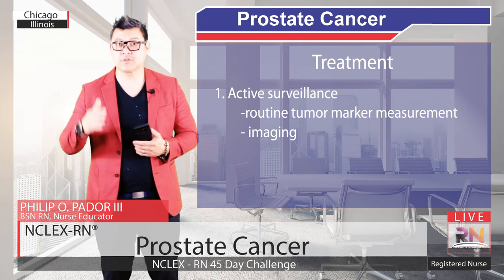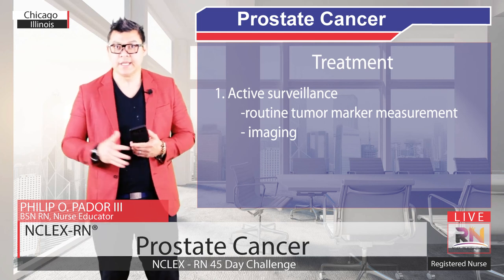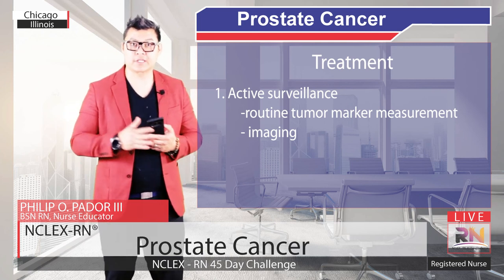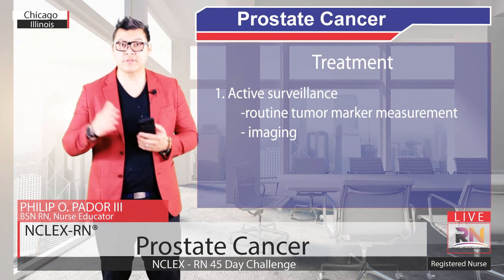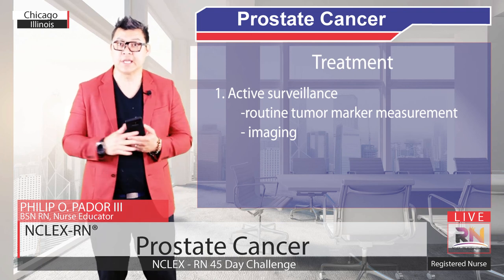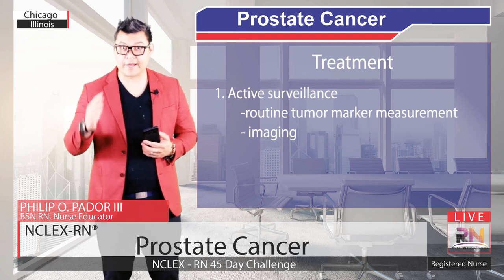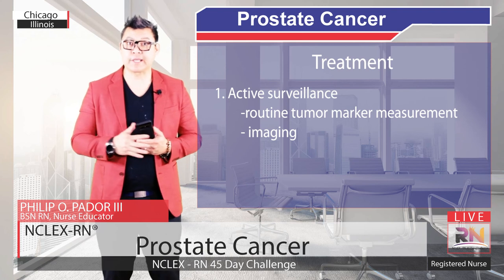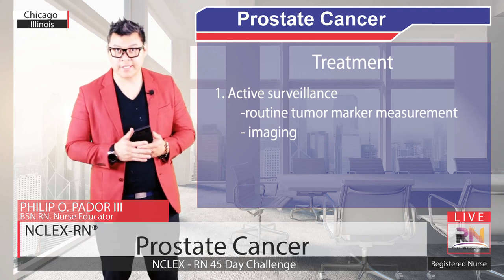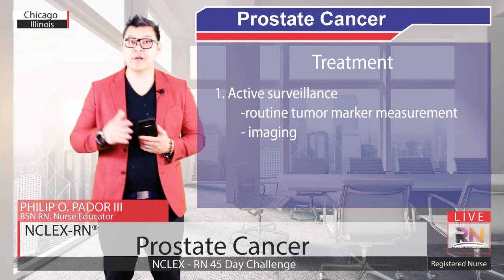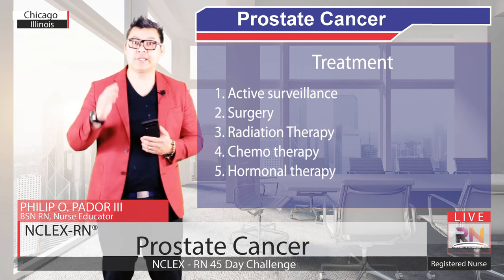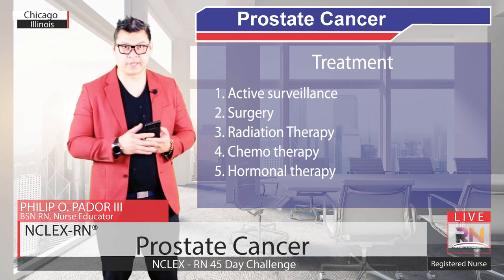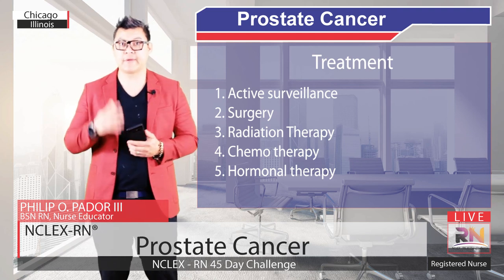In terms of treatment, when the tumor is confined to the prostate and hasn't metastasized, active surveillance is usually done. This includes routine tumor marker measurement as well as imaging to ensure that the prostate cancer remains confined to the prostate. If the tumor spreads beyond that point, treatment options include surgery, radiation therapy, chemotherapy, and hormonal therapy.